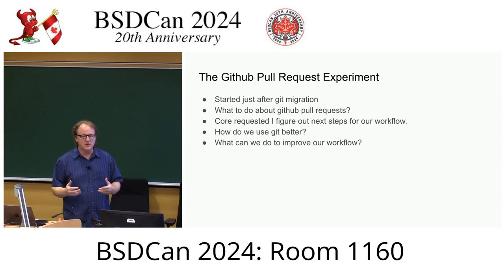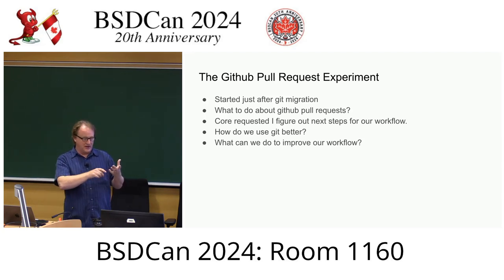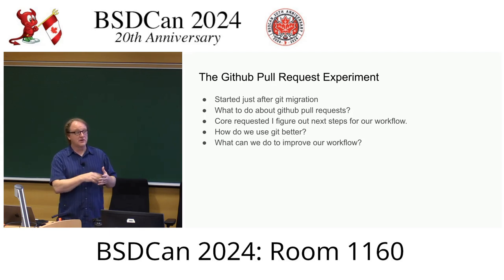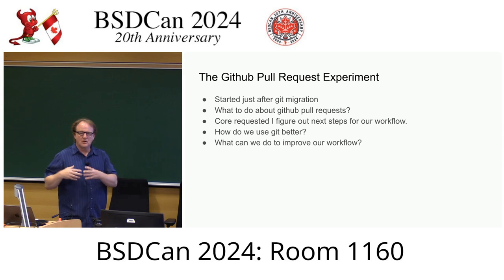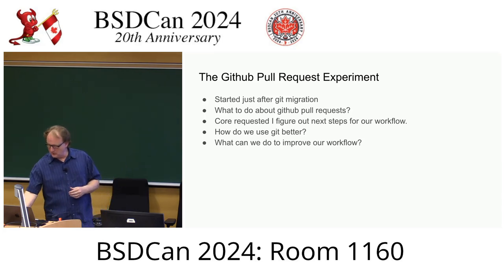One of the things the project has been very bad about historically is that we accept your patch if you can navigate through whatever maze of documentation to find where to submit it, and then we ignore it forever. I was hoping with pull requests we might be able to break that habit. We still have confusing documentation because this is so new and still experimental, but I'm hoping to take it from experimental into production so people who submit can rely on it.